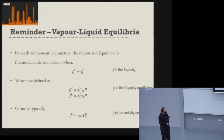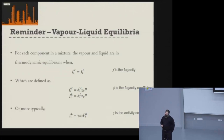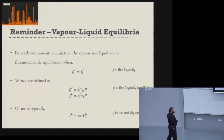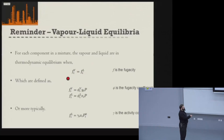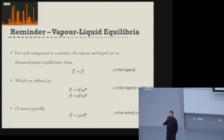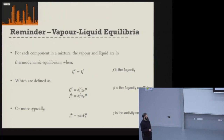Hopefully you should remember that if we've got a multi-component mixture in equilibrium, then the fugacity of all of the components — the fugacity in the vapor phase of each component and the fugacity in the liquid phase of each component — must be equal. That's the definition of equilibrium.